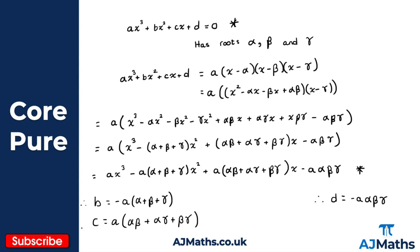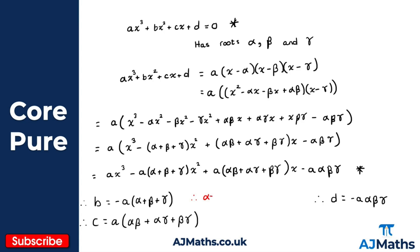What I want to do now is simplify each one of these. So alpha plus beta plus gamma — the sum of the roots — I can get that by dividing through by minus a, so that's equal to minus b over a. For alpha beta plus alpha gamma plus beta gamma, that's going to be c over a. And then for the product alpha beta gamma, that's going to be minus d over a.